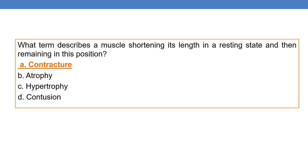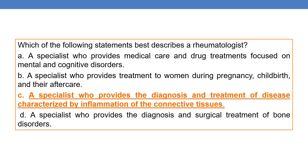The next question: which term describes a muscle shortening its length in a resting state and then remaining in that position? The answer is contracture — contracture is shortening of a muscle. Finally, which of the following best describes a rheumatologist? A specialist who provides diagnosis and treatment of disease characterized by inflammation of connective tissue is known as a rheumatologist.